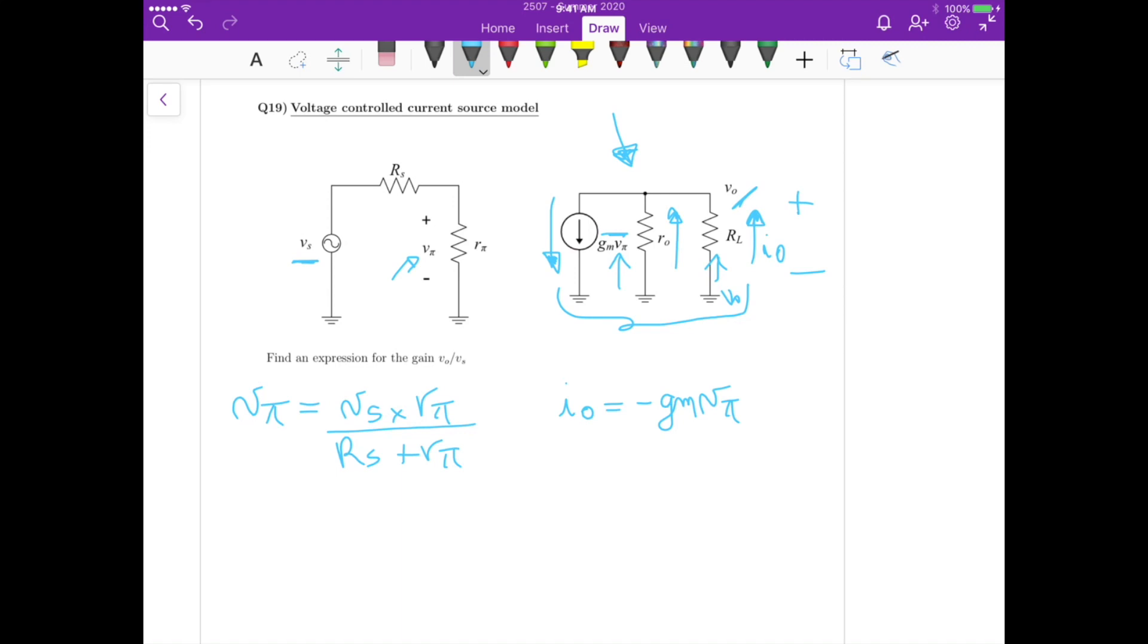That's the total current flowing. Remember, for the current divider, we take the opposite resistor, so times R0 divided by RL plus R0. And Vout equals I0 times RL.